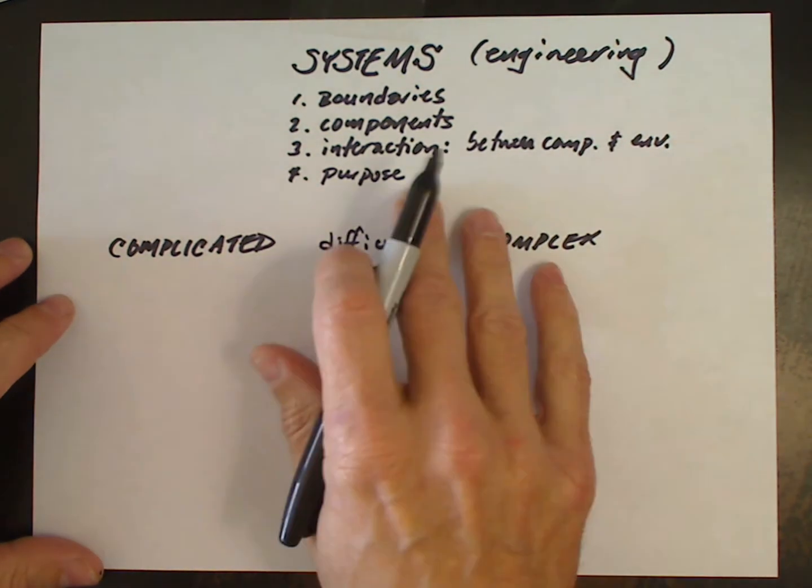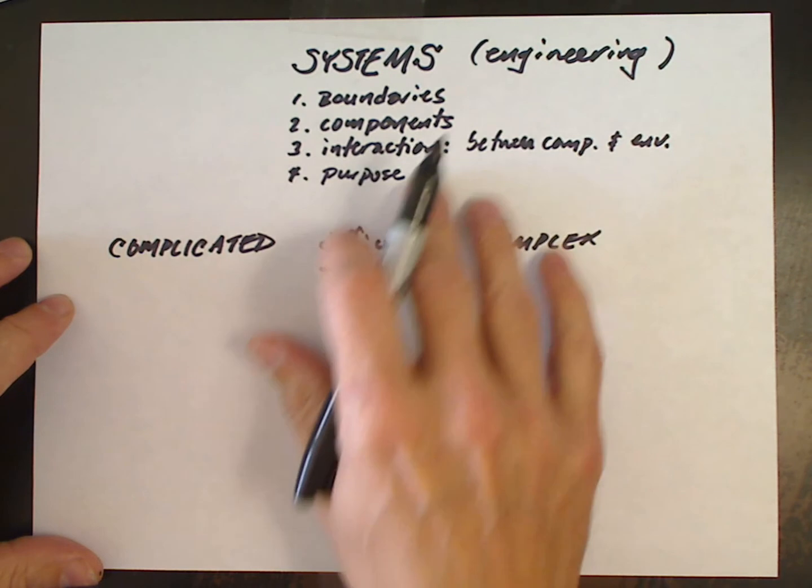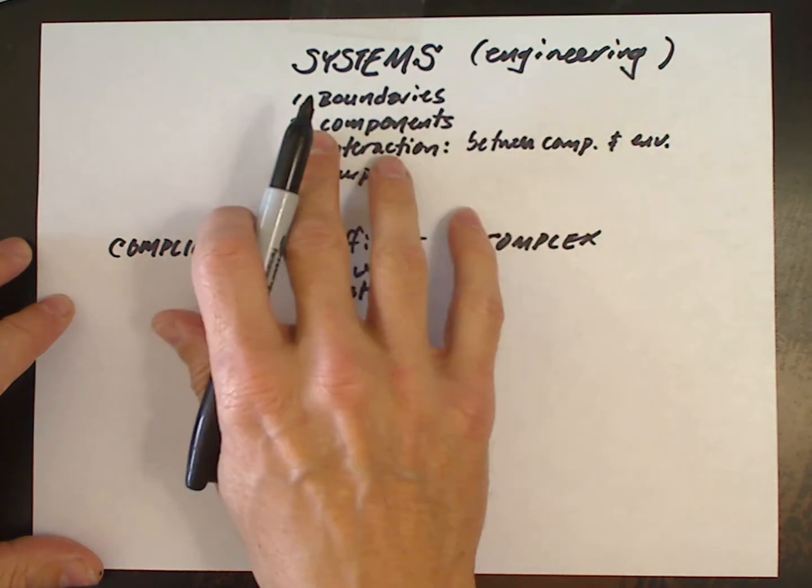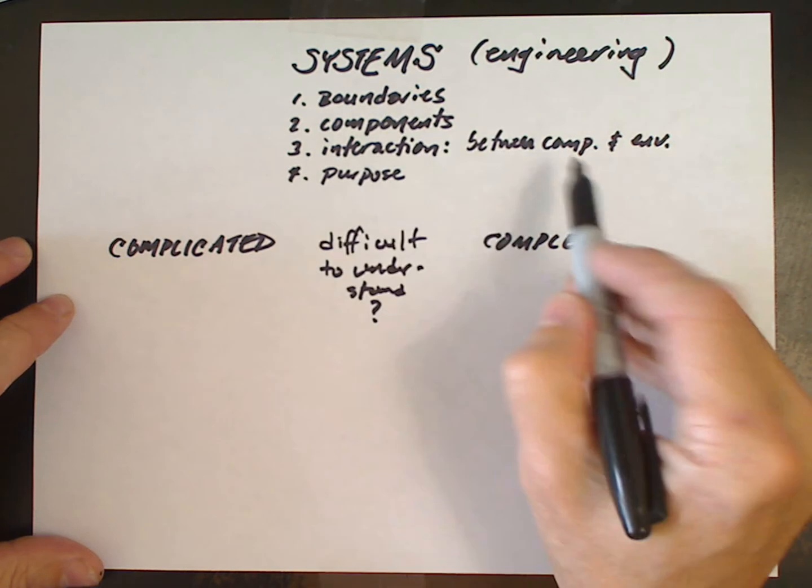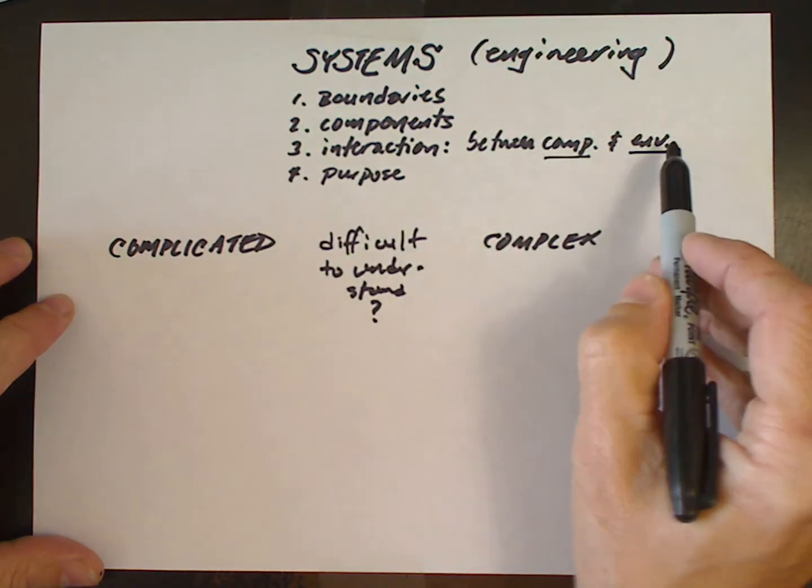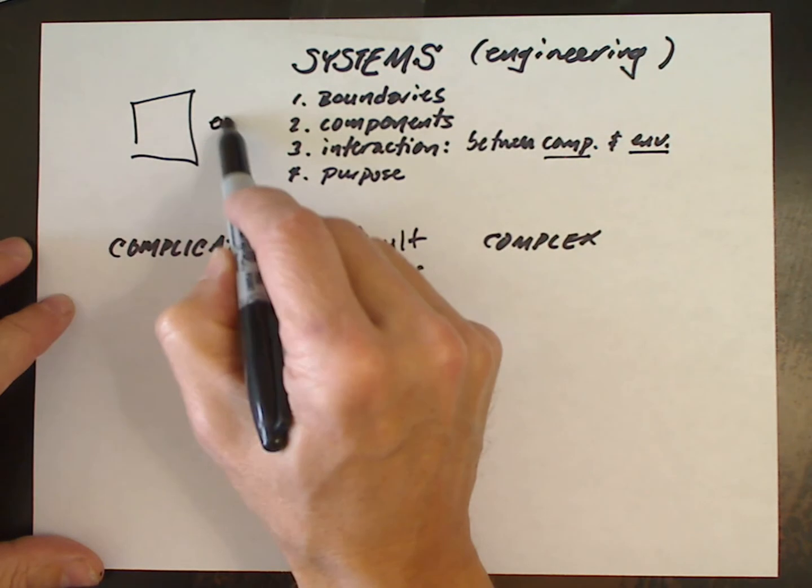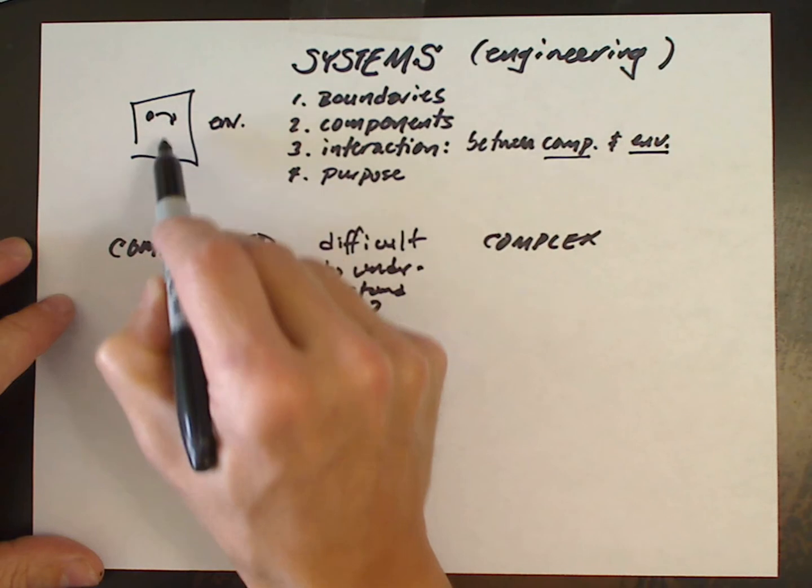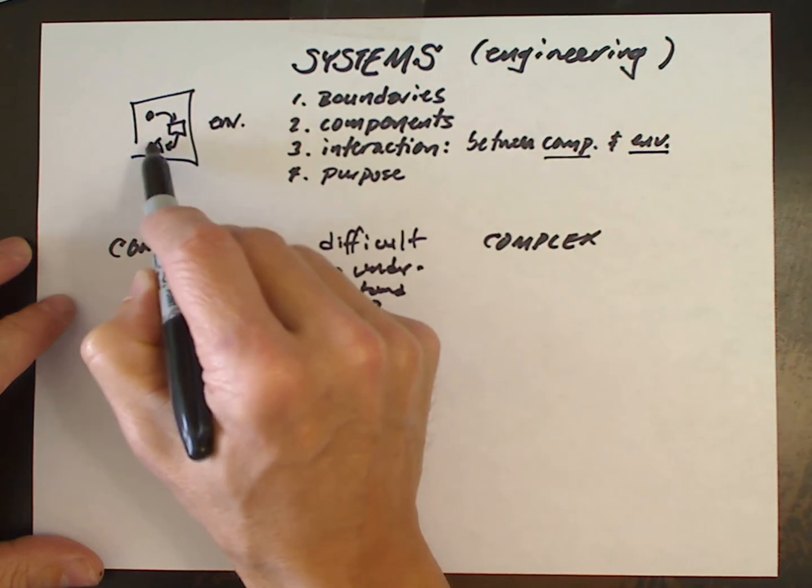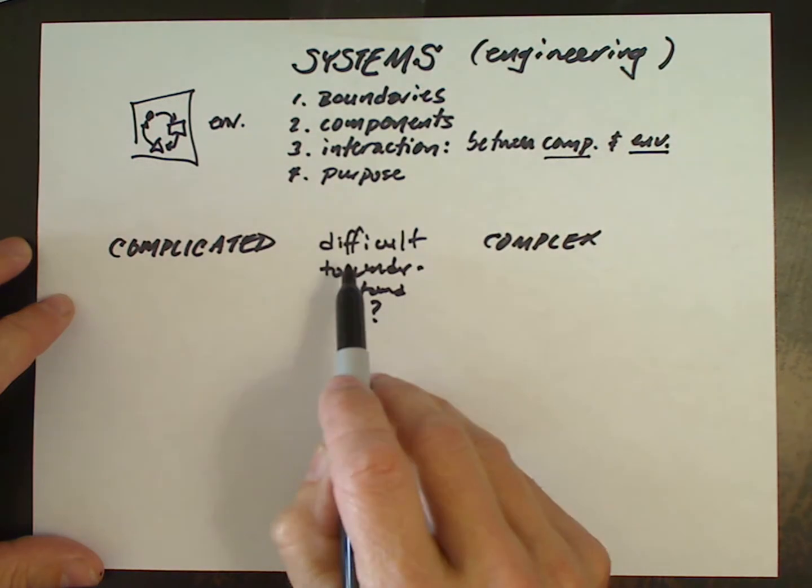In a previous video, we said that engineering systems have boundaries. They must have multiple components. Those components interact both with each other and the environment, that is, the area outside the boundary. And we said that engineering systems, because they're objects of design, must have a purpose.